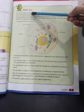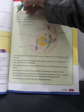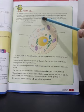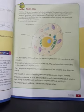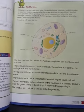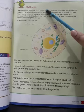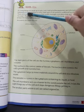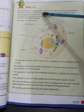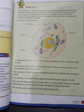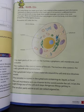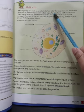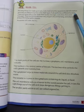All living things are made up of cells. Cells hold all the equipment and information necessary to keep an organism alive. Each type of cell performs a different function.